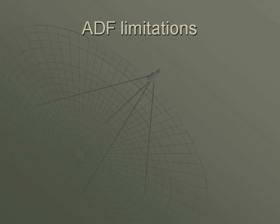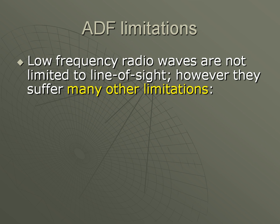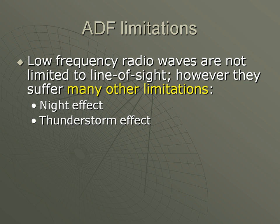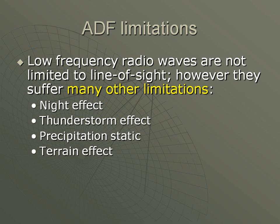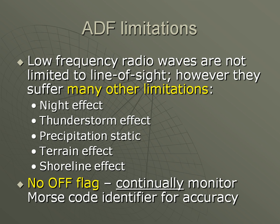Low frequency radio waves are not limited to line of sight, which is why ham radio operators can receive signals from the other side of the world. But as you can tell if you've ever tried to listen to AM radio, it suffers from many other limitations, making it difficult to receive a clear, accurate signal. In addition, an ADF does not have an off flag, making it necessary to continually listen for the Morse code identifier when navigating with ADF.